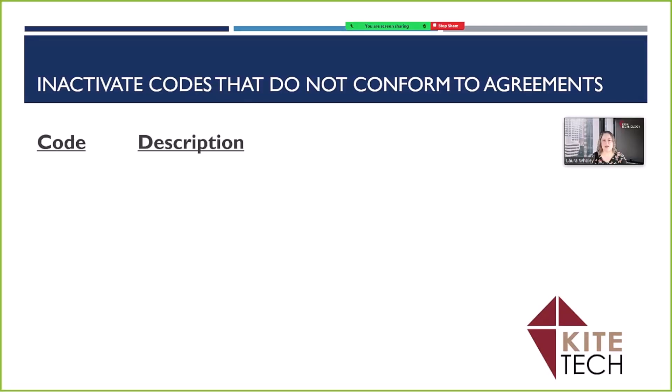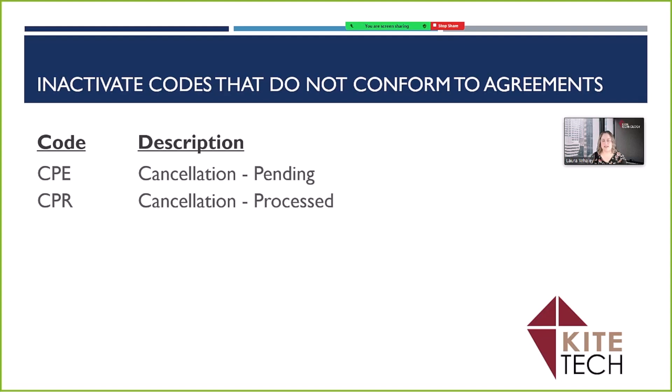These policy statuses include CPE for cancellation pending and CPR for cancellation process. We've also seen some agencies add an AUD for an audit or an END for endorsement. Statuses like these do not easily fit because, for example, an endorsement could be on new business or a renewal business.